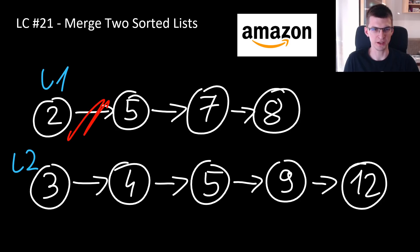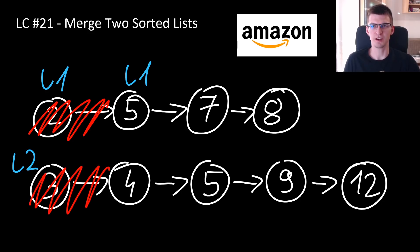After we add it in some way to a combined list, we should move L1 pointer to the next node and now we decide about L2 versus L1. L2 is smaller value, so I will append node with value 3 to the end of combined list being created and now L2 moves to the next node.